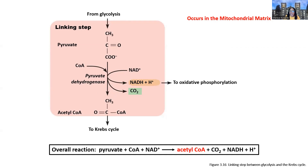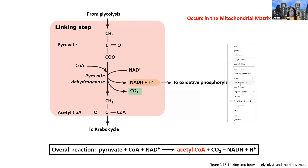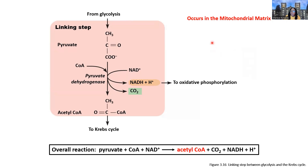We left off looking at the intermediary step between glycolysis and the Krebs cycle — the TCA cycle — called the linking step. The linking step occurs in the mitochondrial matrix. The mitochondria is one of our organelles, important for ATP production, the powerhouse of the cell. Glycolysis occurs in the cytosol, so these are two different locations within the cell.